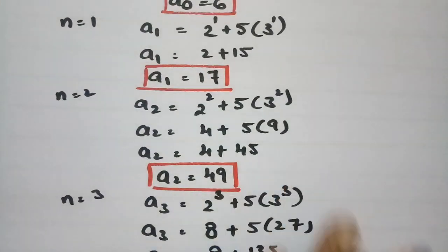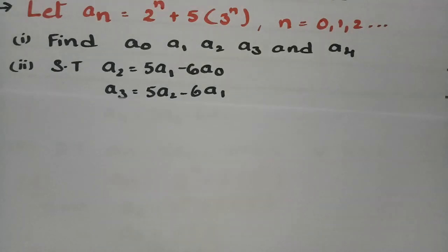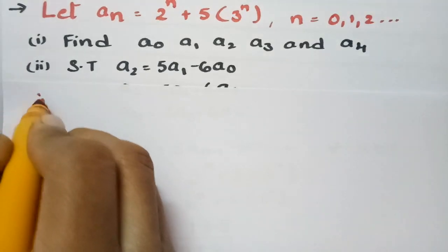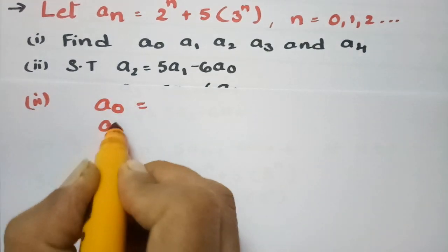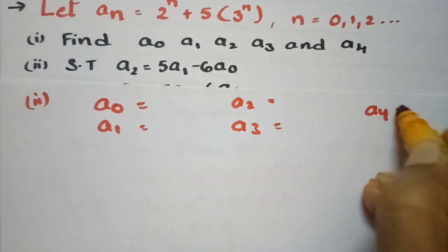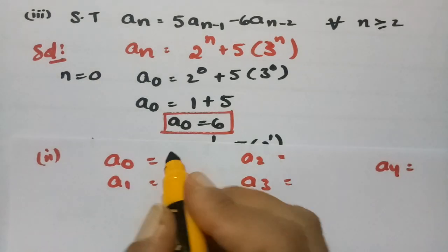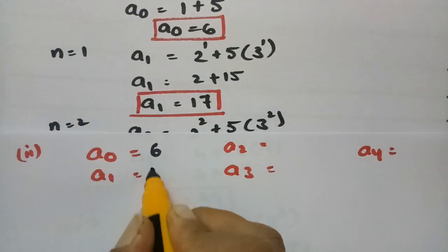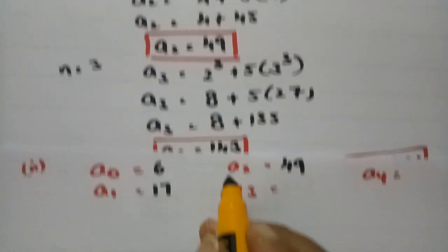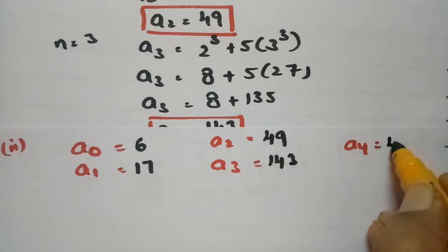So the values are: a_0 equals 6, a_1 equals 17, a_2 equals 49, a_3 equals 143, and a_4 equals 421. Now the second question is to verify these satisfy the recurrence relation.